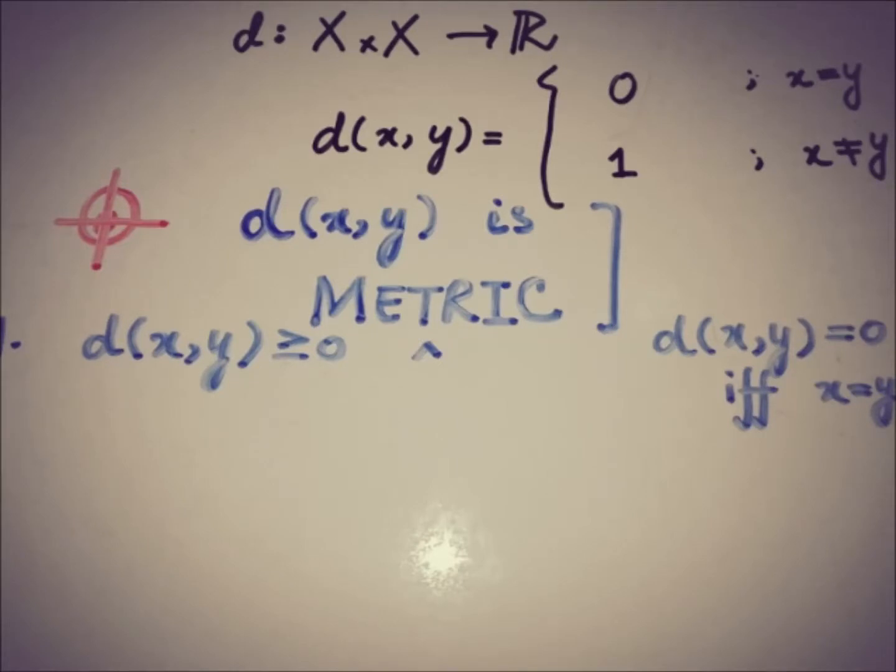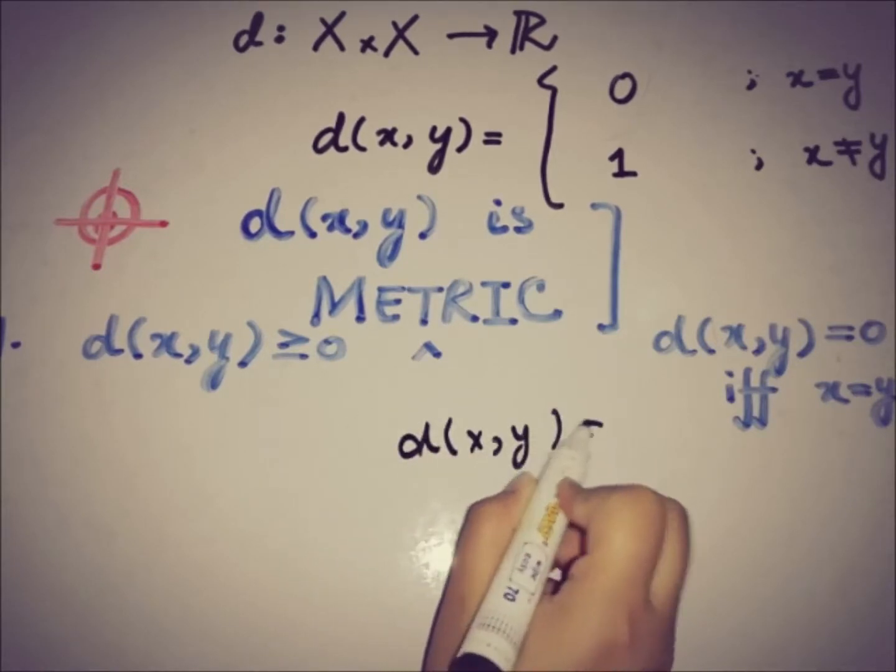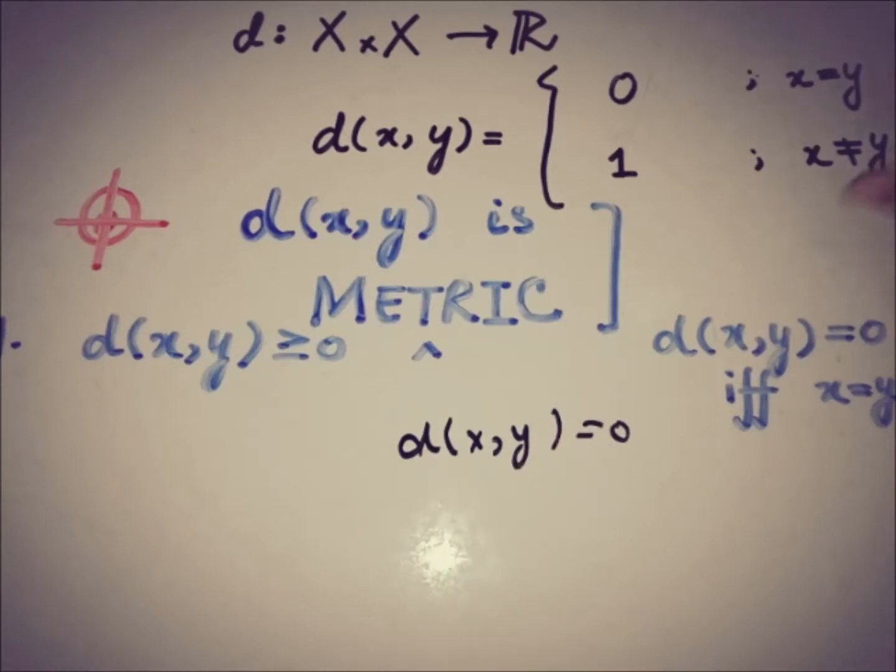Now moving toward the other part: if the function equals 0, then x equals y. So if d(x,y) equals 0, then by the function definition, it states that x equals y. So this is also true by the definition of the function.